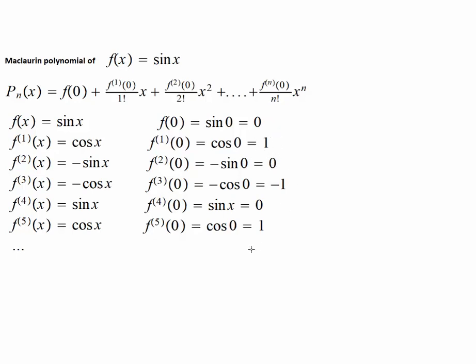For the remaining derivatives at 0, every alternate term is 0, and the signs alternate as positive 1 and negative 1. So when we substitute all these values, what do we get for the Maclaurin polynomial?